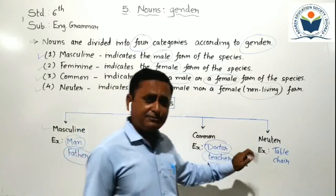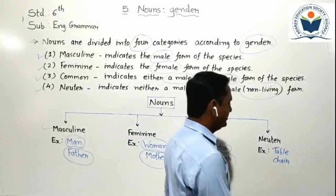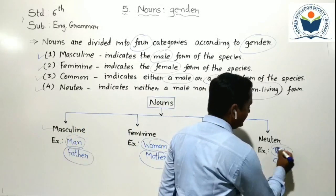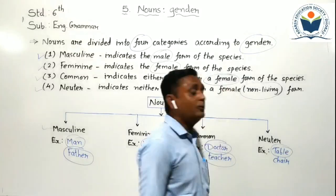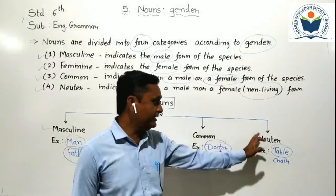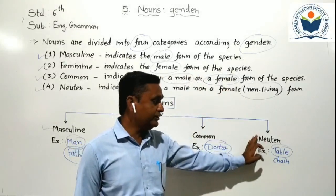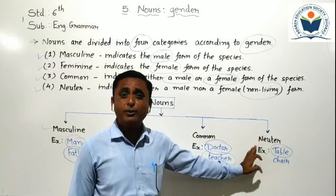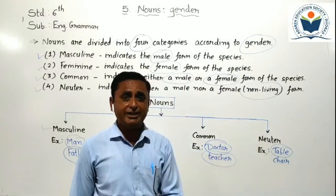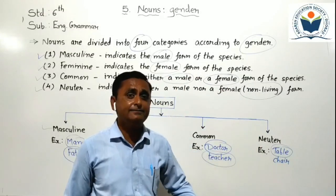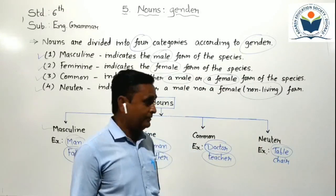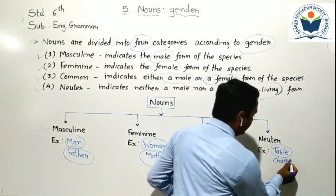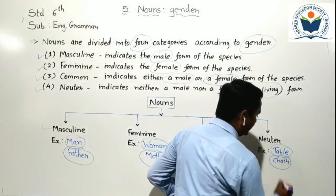The last one is neuter gender. Neuter gender example: table is given here. Non-living things we can put here under neuter gender type. Table, chair, board — all these things come under neuter gender.